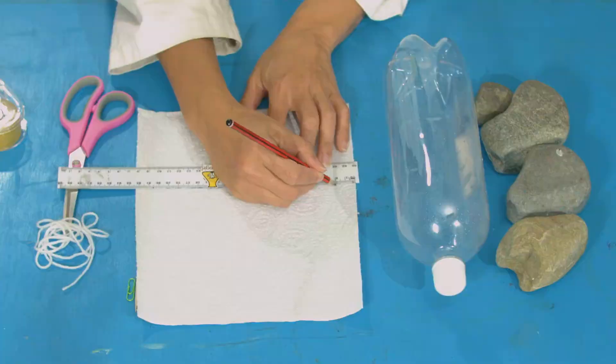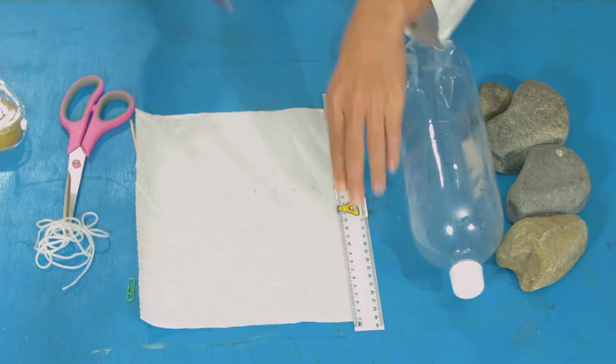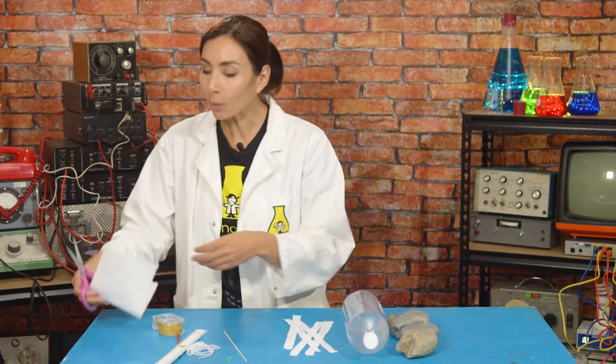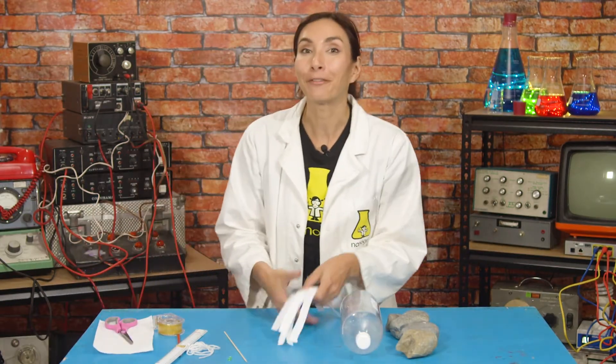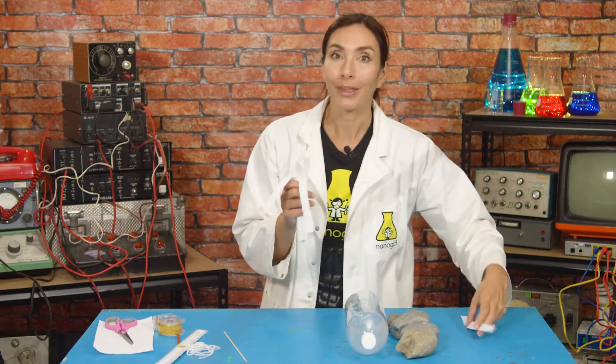So we're going to start by measuring five two-centimeter strips on your paper towel and we're going to cut those out. There we go. It's important that all of these are the same width so that it's a fair test. So now we have five identical strips. Take one out. This is going to be the one that we use to measure our baseline tensile strength.